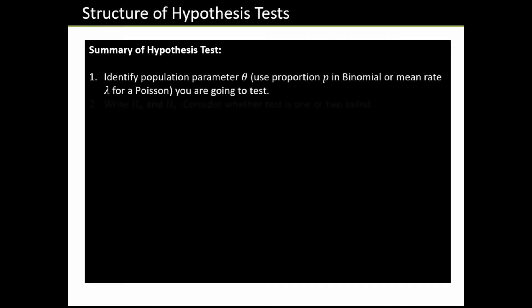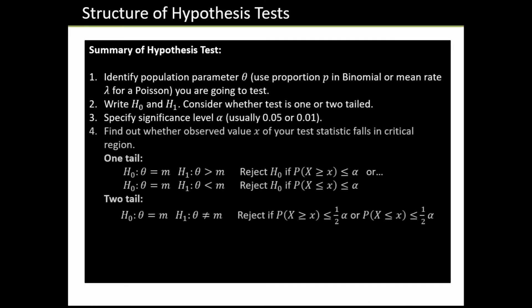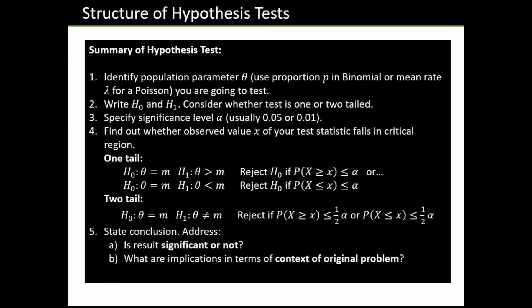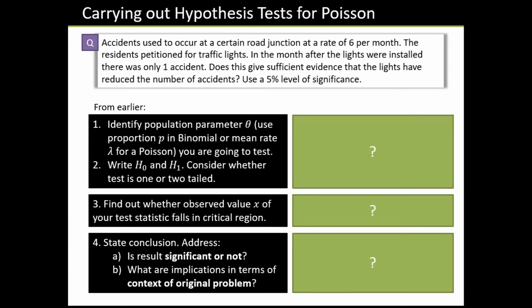Here's a summary of the steps that we used for the binomial hypothesis tests last year, and the same steps apply in a hypothesis test for the Poisson distribution. It's probably worth just pausing the video and having a quick look through these to check you're okay with them. The example I've set up has those steps down the left-hand side and space to complete the example down the right-hand side.